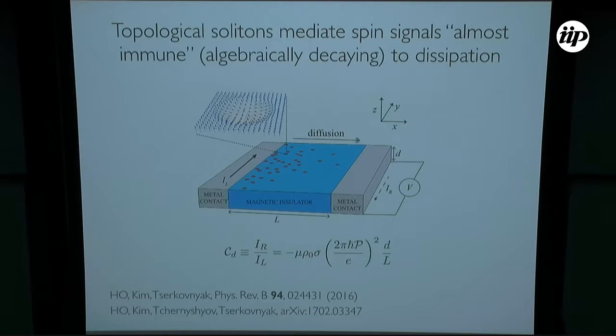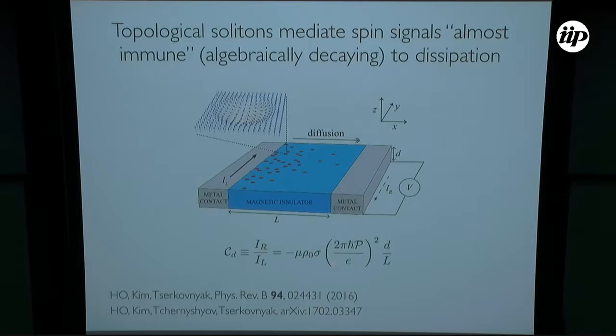The skyrmion charge now diffuses due to thermal agitation over the bulk of the system and eventually reaches the second terminal. The annihilation of these skyrmion textures at this terminal by the reciprocal effect pumps itinerant spins in the opposite direction, sustaining a drag signal—a negative drag signal—that decays only algebraically with the distance between metals, similarly to a spin superfluid and in clear contrast to spin waves or magnon excitations. This reflects the topological protection of the skyrmion charge being pumped into the system.